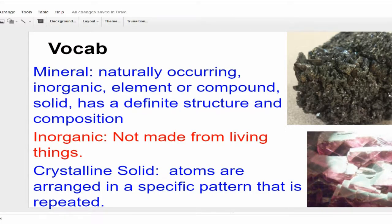The first thing we want to do is review a few things. In order for a mineral to be a mineral, according to geologists, it first needs to be naturally occurring — not man-made. It's got to be inorganic, made out of elements or compounds of elements. It must be a solid — therefore water cannot be a mineral — and it has to have a definite structure and composition, made out of specific identifiable things. Remember that inorganic means not made from living things, and I want to make sure you understand the word crystalline.